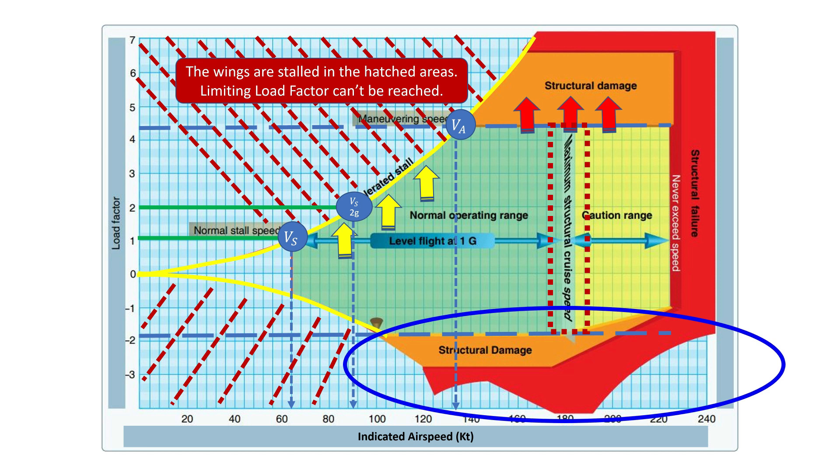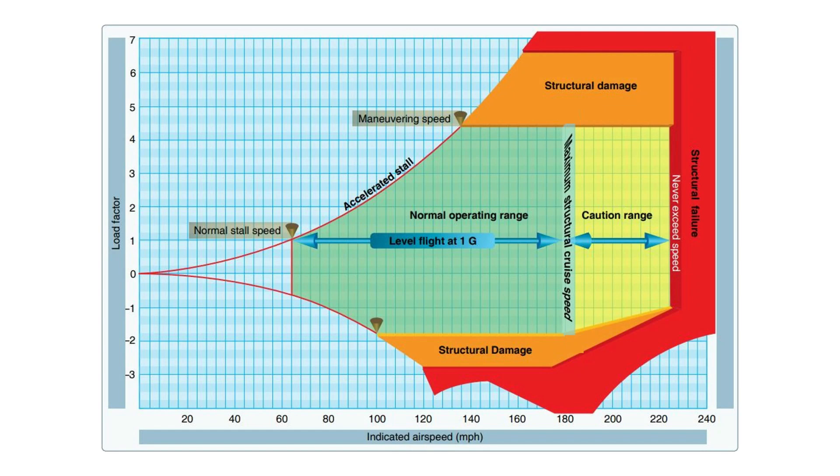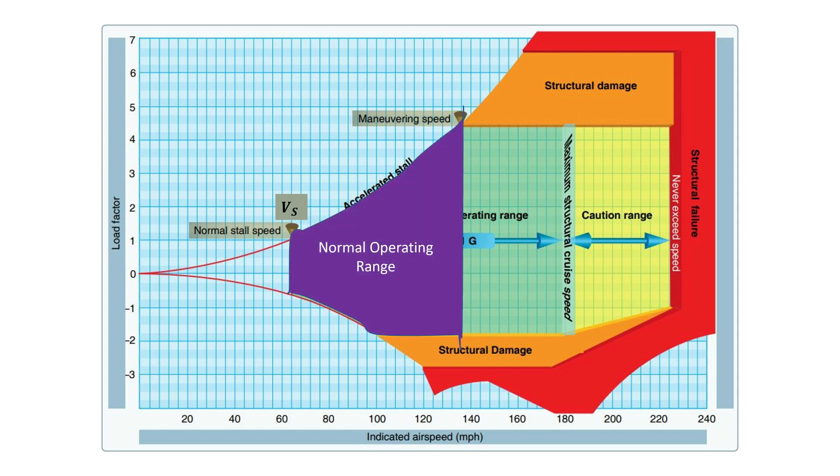And finally, we have the red line, never exceed speed VNE, in this case 225 knots, which is only a breadth away from structural failure. The moral of the VG diagram is essentially to operate your airplane in the range between the stall speed VS and the design maneuvering speed VA.